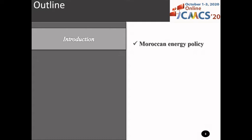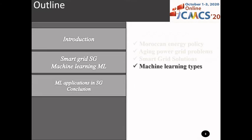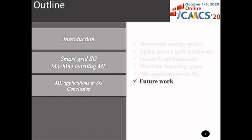The introduction will present some of the main objectives, achievements and opportunities of national energy policy, and the problems of the current aging grid. Next, we present the solutions and advantages of smart grid. Before moving on to the results, we will give a brief presentation of the principles, strategies and types of machine learning. After, we present some applications of different algorithms to achieve a variety of objectives. Lastly, we summarize and conclude.